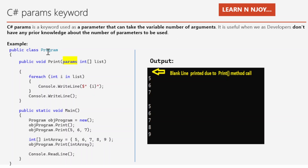Let's understand with the help of an example. There is a class named Program that has two methods: a print method and a static void Main method. In the print method, there is an int array named 'list' tagged with the params keyword, making it a params parameter. Inside this print method, we are iterating this list and printing each integer value to the console window.